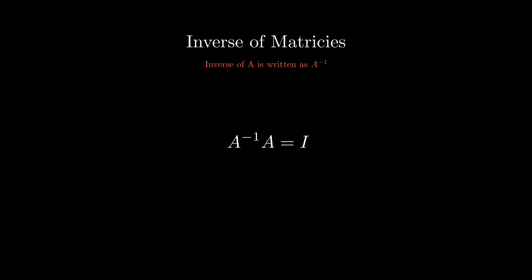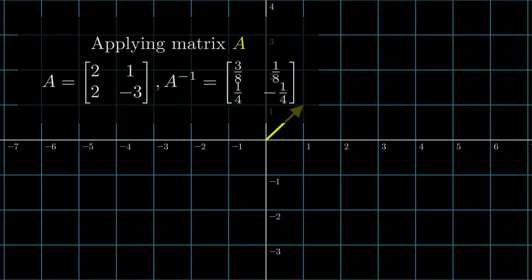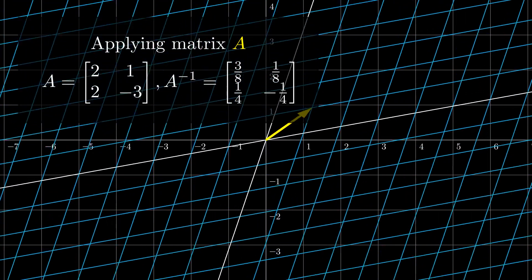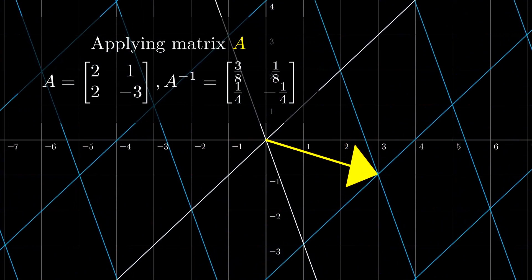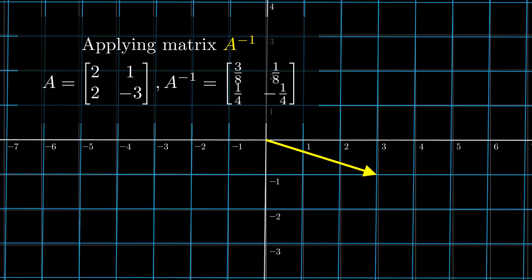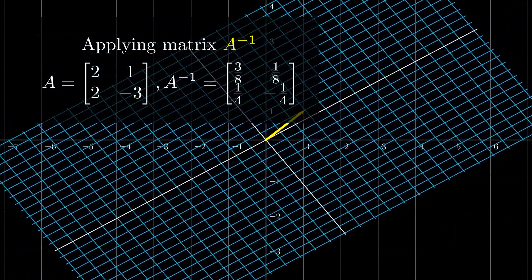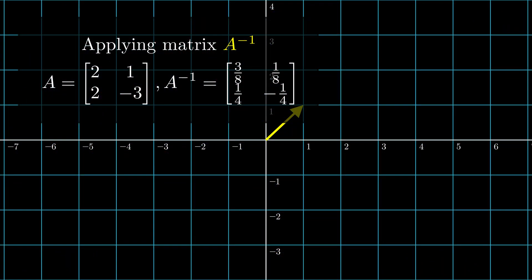We denote this with a negative one. Graphically, this means that the column vector stays in the same spot.